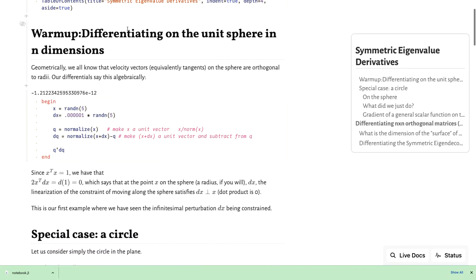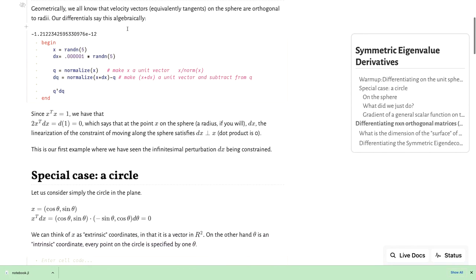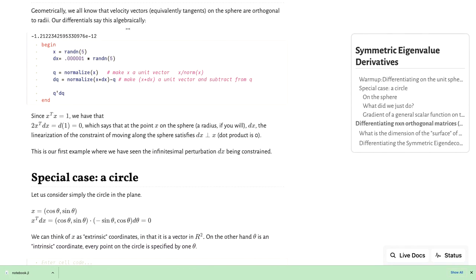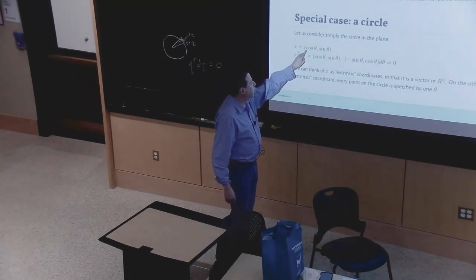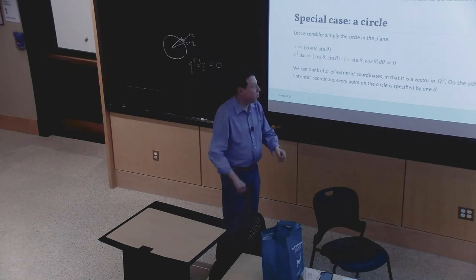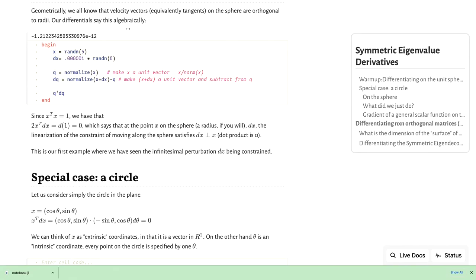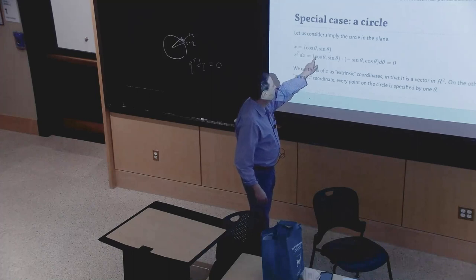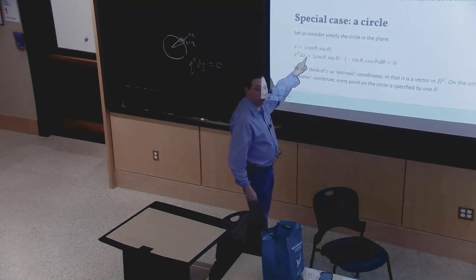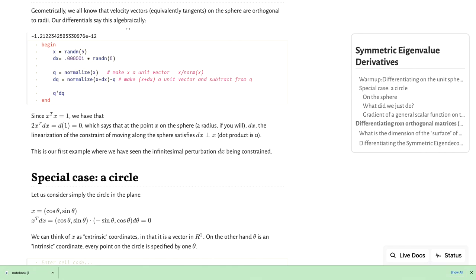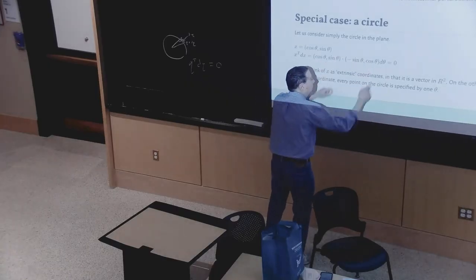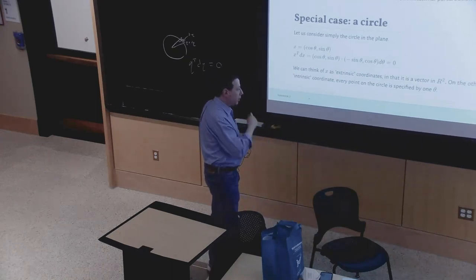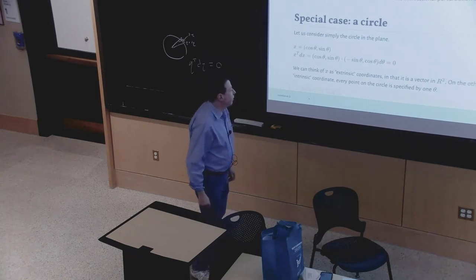We can even check it with a little exercise. Suppose x is restricted to being on a circle — x is a vector in two dimensions parameterized by theta. If you wanted to calculate x transpose dx as a quick check: x is the vector (cosine theta, sine theta). Then dx by taking simple ordinary derivatives is (minus sine theta dtheta, cosine theta dtheta). You can see that this dot product is obviously minus cosine sine plus sine cosine — it's obviously zero.